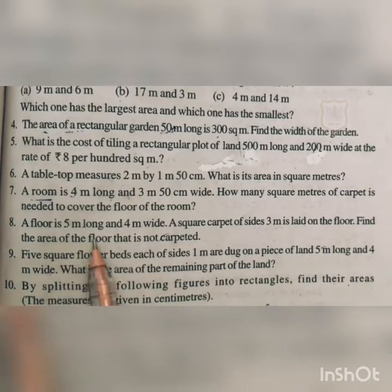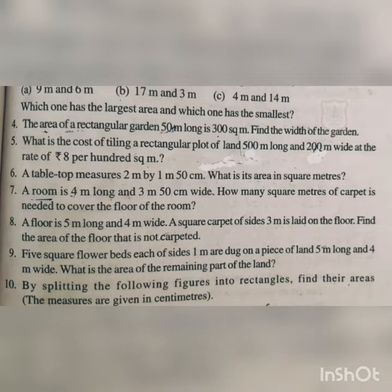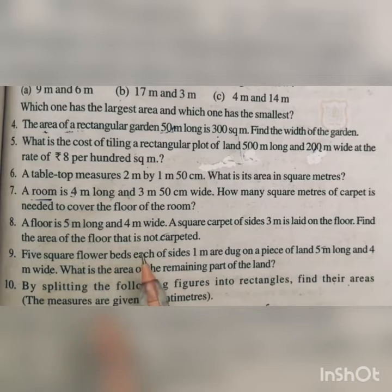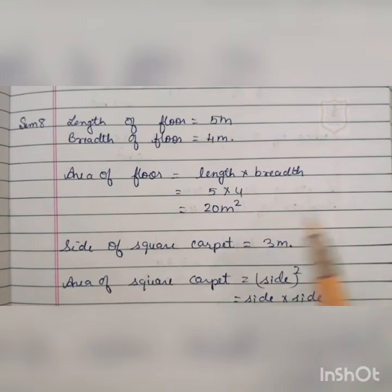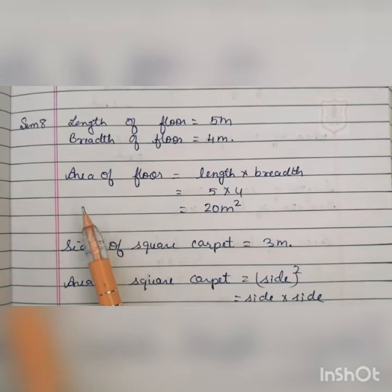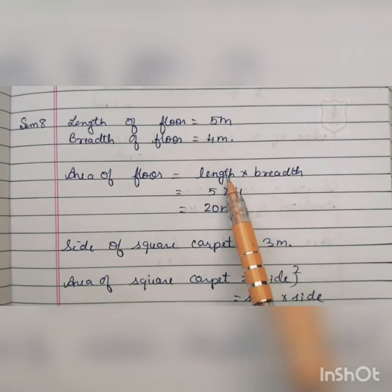Question number 8: A floor is 5 meters long and 4 meters wide. A square carpet of side 3 meters is placed on it. Find the area of the floor that is not covered by the carpet. The area of the floor is length × breadth, that is 5 × 4, giving 20 square meters.